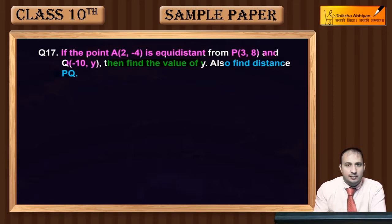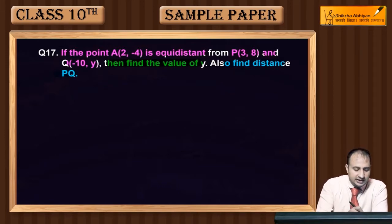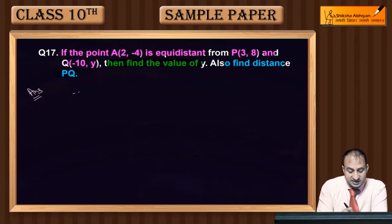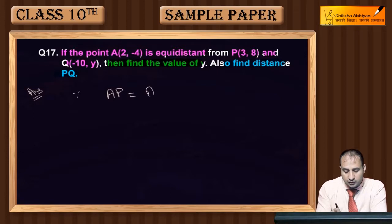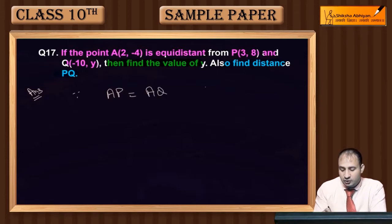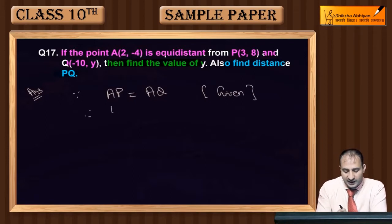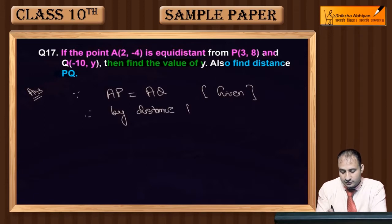Since AP is equal to AQ — equidistant hai toh dono distances same honge, this is given. So therefore, by distance formula, hum AP aur AQ nikalenge aur equate karenge.